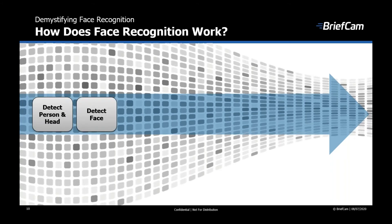BriefCam then crops the faces from the head and removes hair, neck, and ears. Then, BriefCam uses its three-level classification of quality of the face image.